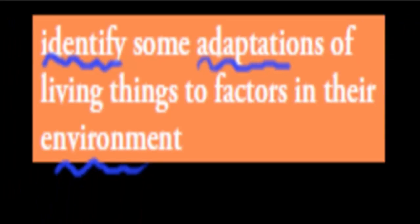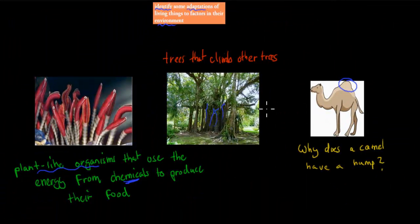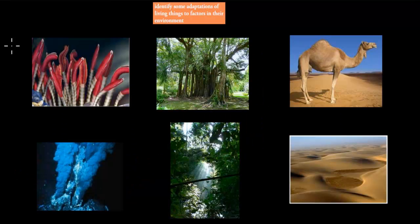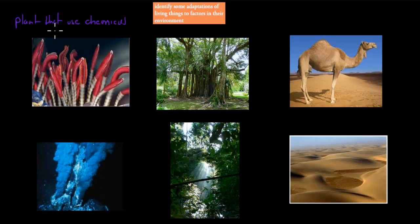That's what we're doing in this video. We're going to cover these three examples and relate that to the environment. So why do you have these adaptations? Because they live in certain environments. For example, we mentioned these here—these are the plants that use chemicals to produce their food.